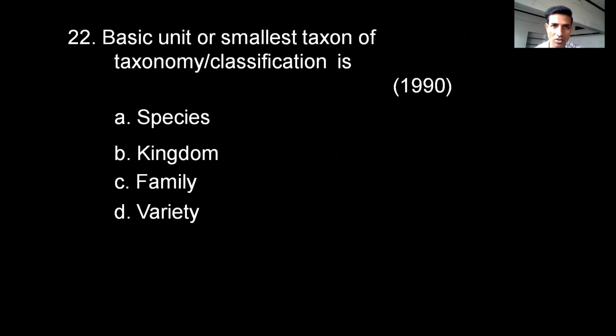The basic unit or smallest taxon of taxonomy or classification is — species, kingdom, family, or variety. The correct answer is species.